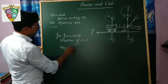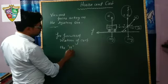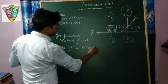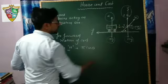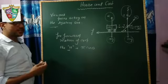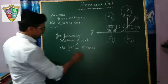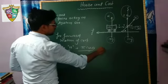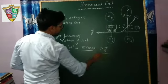For forward motion of the cart, the horizontal component, that is R cos theta (because this theta is the angle between the resultant and the horizontal axis), this horizontal component should be greater than the frictional force.